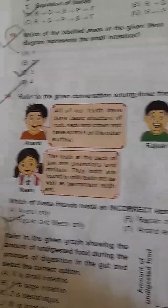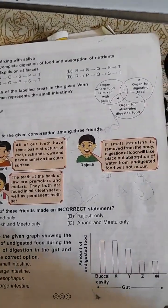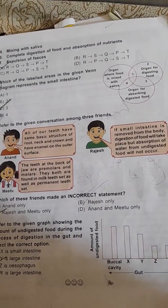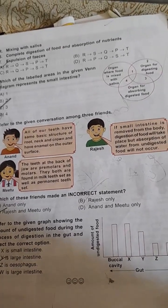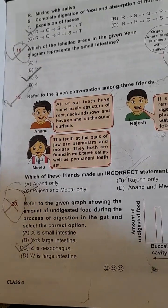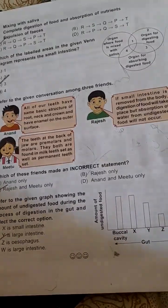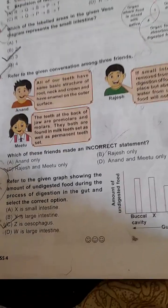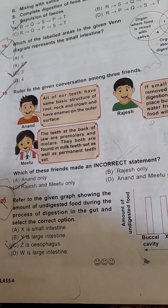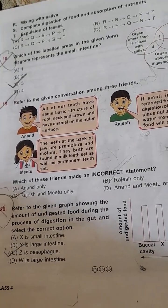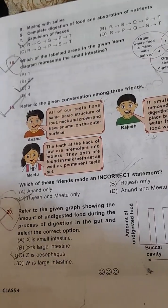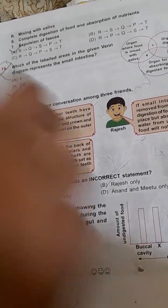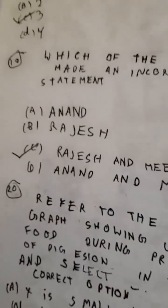Refer to the conversation among three friends. All of our teeth have the same basic structure of root, neck and crown, and have enamel on the outer surface — he's correct. If small intestine is removed from the body, digestion of food will take place but absorption of water from undigested food will not occur — he's incorrect, as digestion will also not take place. The teeth at the back of the jaw are premolars and molars; they are found in milk teeth as well as permanent teeth — no, they are found only in permanent teeth. So the correct option is option C, Rajesh and Mitu.